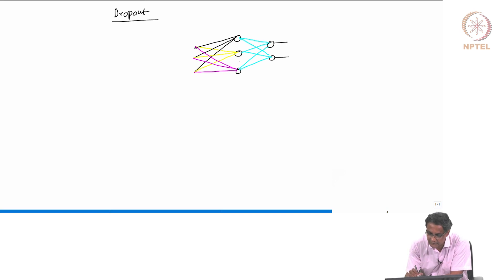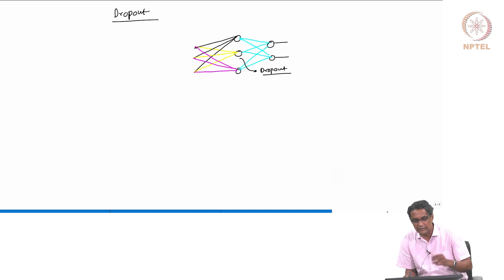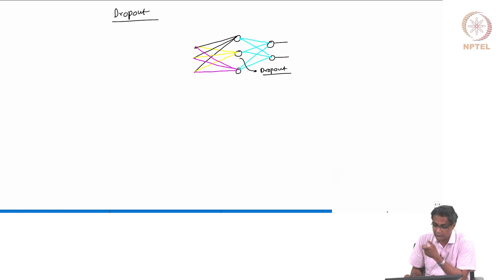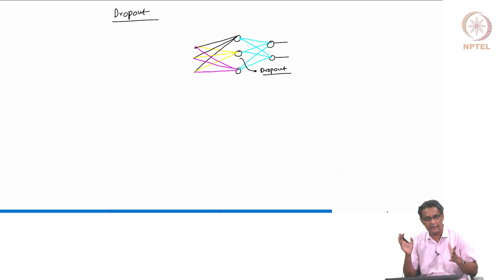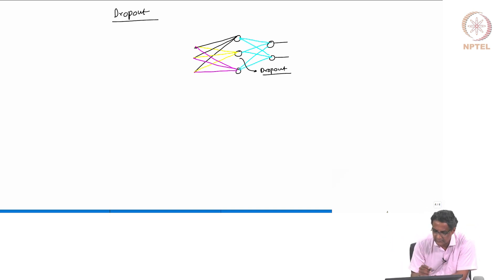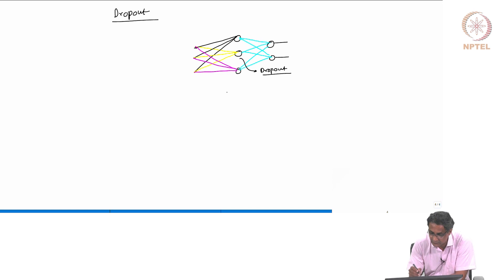For example, if I drop this neuron out — drop out means, I will tell you what we actually do. It is not like you drop just one neuron permanently, but suppose you drop it, then what it effectively means is it is like hanging there, it does not do anything. Just to illustrate this idea of dropout: what this effectively means is that once you drop it, the network will then kind of look like this.